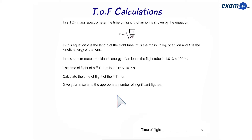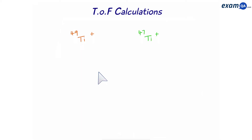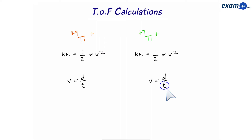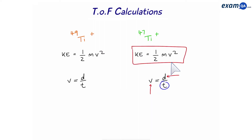In this question, we have two different isotopes of titanium — 49 and 47 — and we've been asked to calculate the time of flight of the 47 isotope. To answer this question, we're going to use two different methods. For the first method, we write down the two isotopes and the equation for kinetic energy: half times mass in kilograms times velocity squared. We also write velocity equals distance over time. We want to work out the time for titanium-47, so we need the velocity of Ti-47 and the distance of the tube. We'll use the kinetic energy formula to work out velocity.